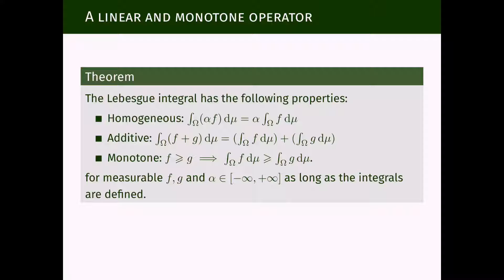First, if a constant is multiplying a function f, we can take that constant out of the integral as long as both integrals are defined — the one after taking out the constant and the one with the constant inside. Typically if alpha is a finite number and it's not zero, the first integral will be defined if and only if the second integral is defined.